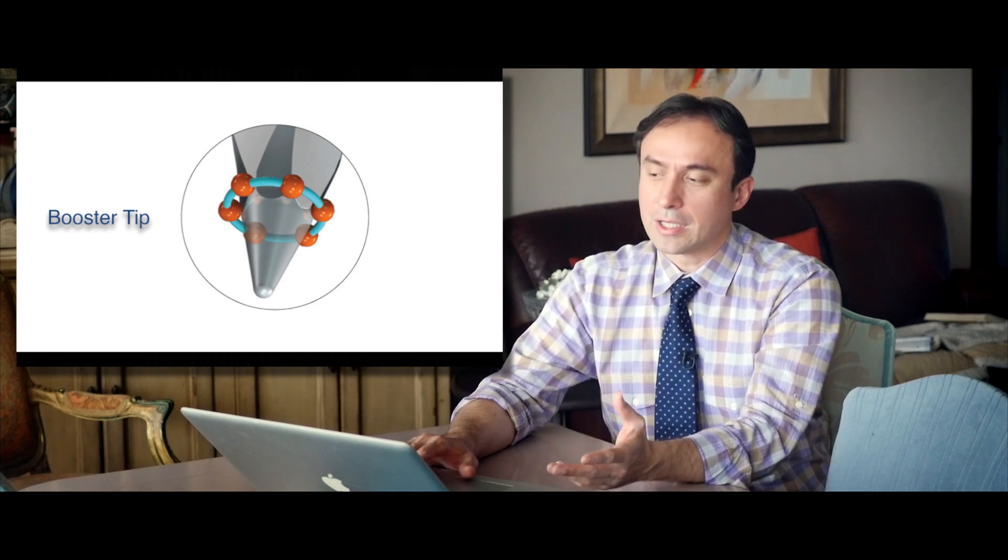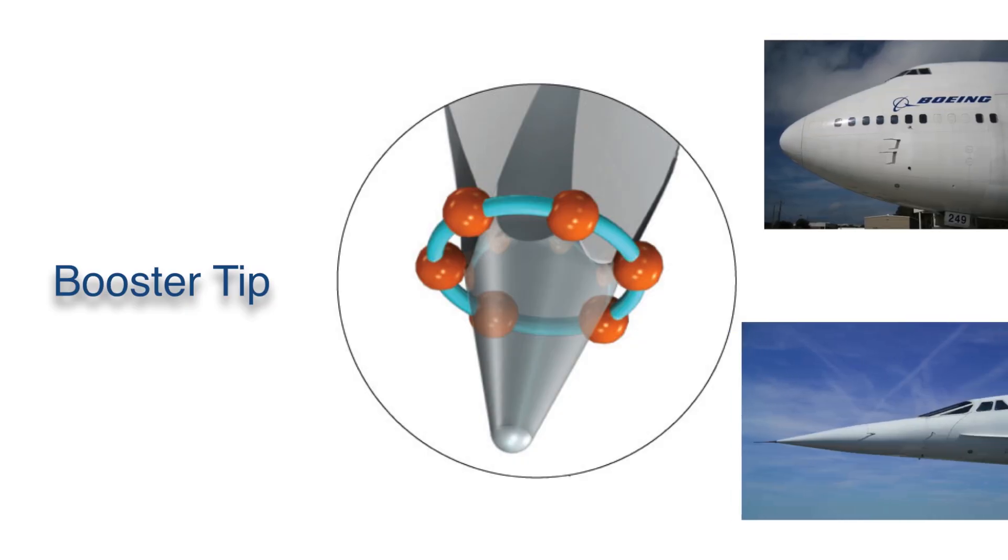The booster tip analogy is probably best done by thinking about the nose of a Boeing 747 jumbo jet compared to the nose of a Concorde plane. A Concorde's narrow nose allows it to be a little bit more aerodynamic, and that's virtually the same thing that happens with the booster tip.